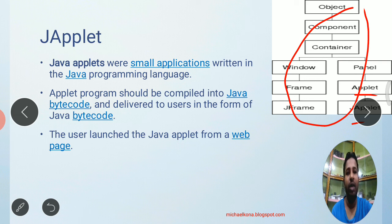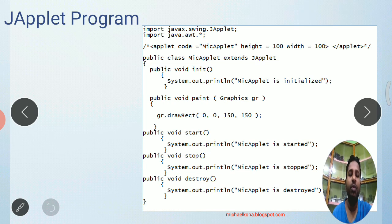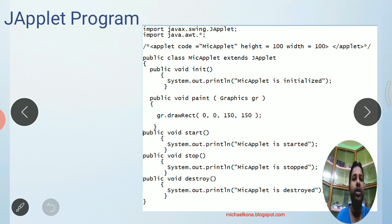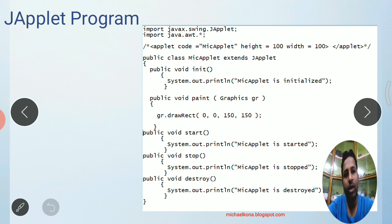Instead, we will see the lifecycle methods of the applet. Here is a sample program for applet. The first line is: import javax.swing; and import javax.swing.JApplet. This statement means we are importing the JApplet class from the Swing package. We are also using some AWT classes, so we write import java.awt.